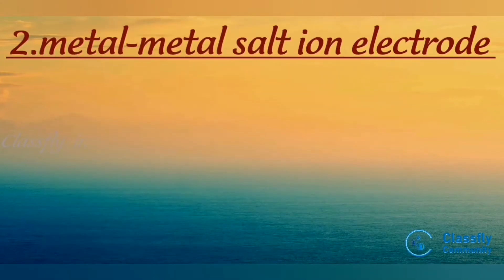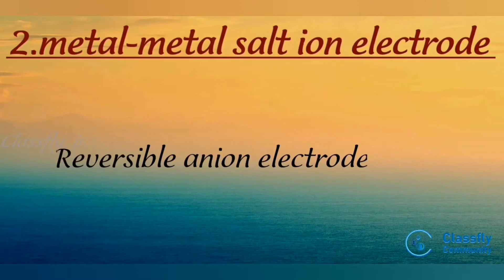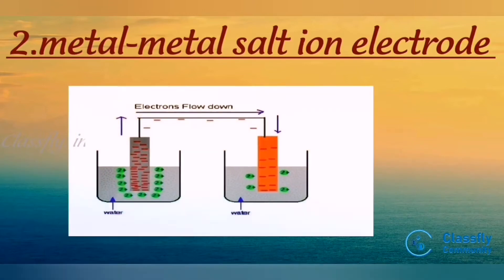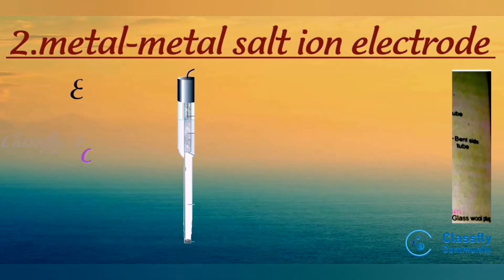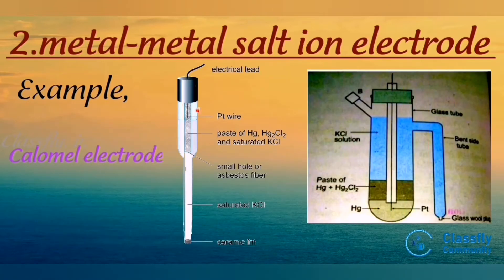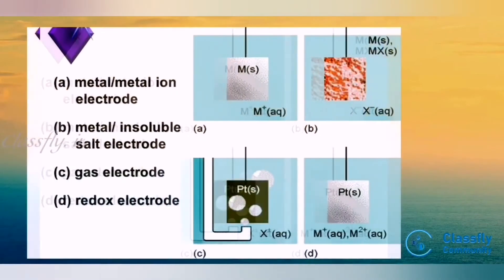The second type of electrode is the metal-metal salt ion electrode. It is also called a reversible anion electrode. In this electrode, a metal and a sparingly soluble salt of that metal are in equilibrium with a solution containing the same anion as the sparingly soluble salt. For example, the calomel electrode.